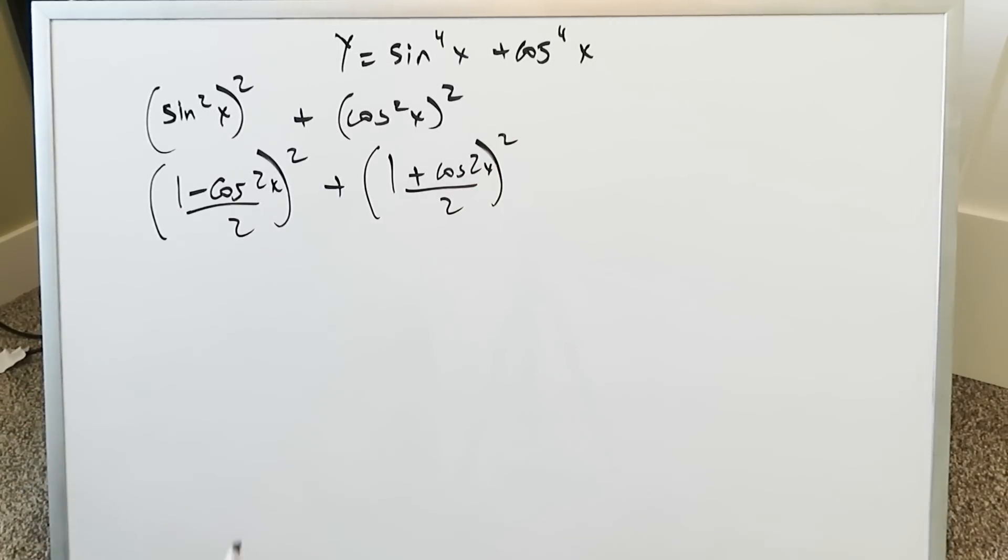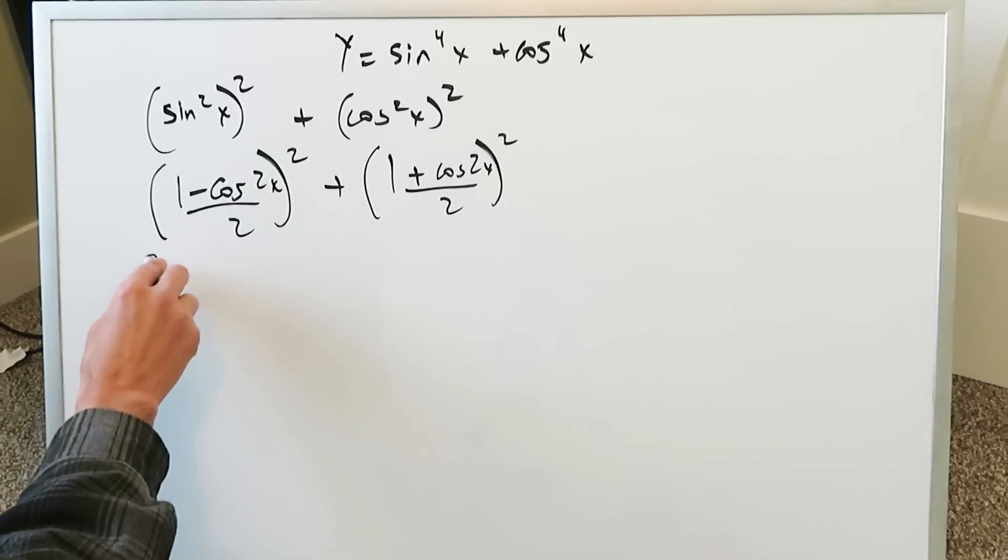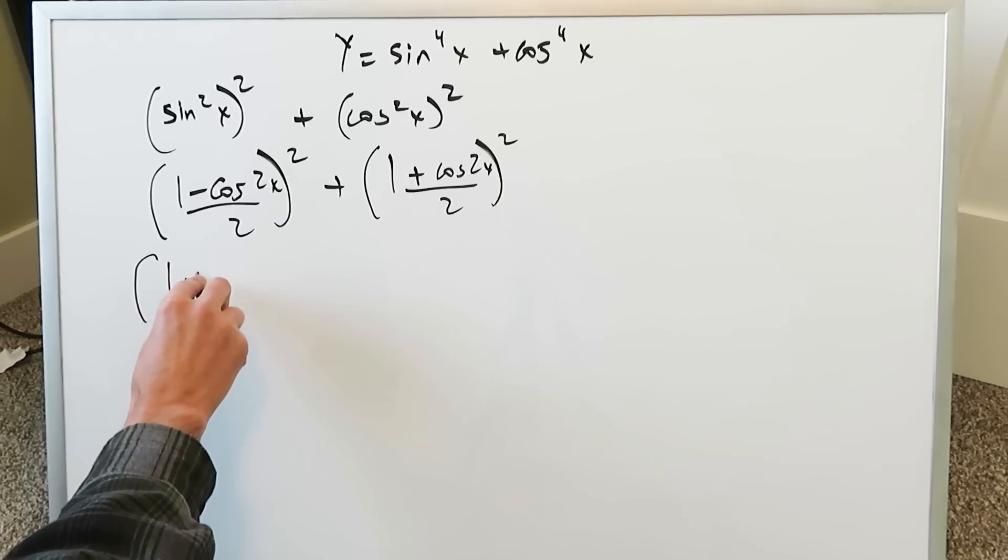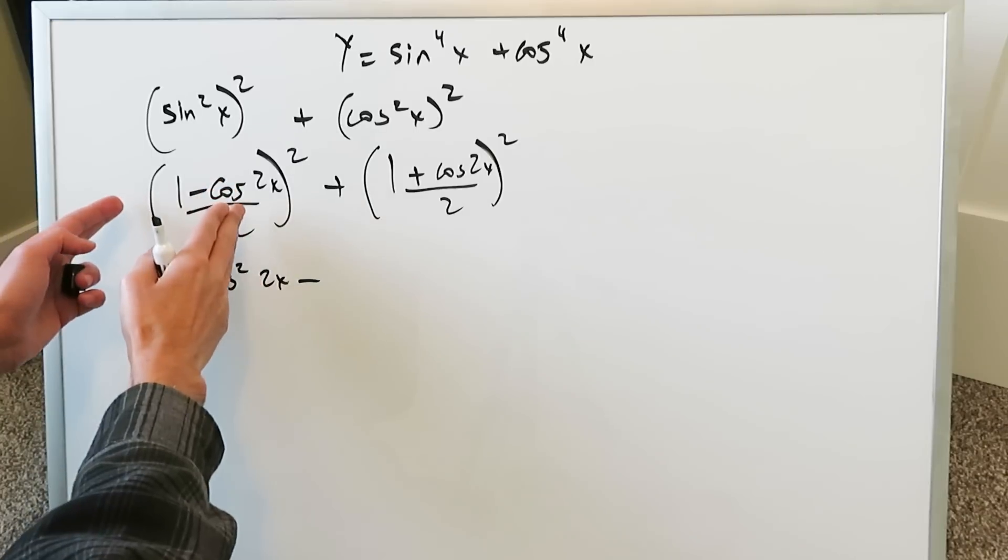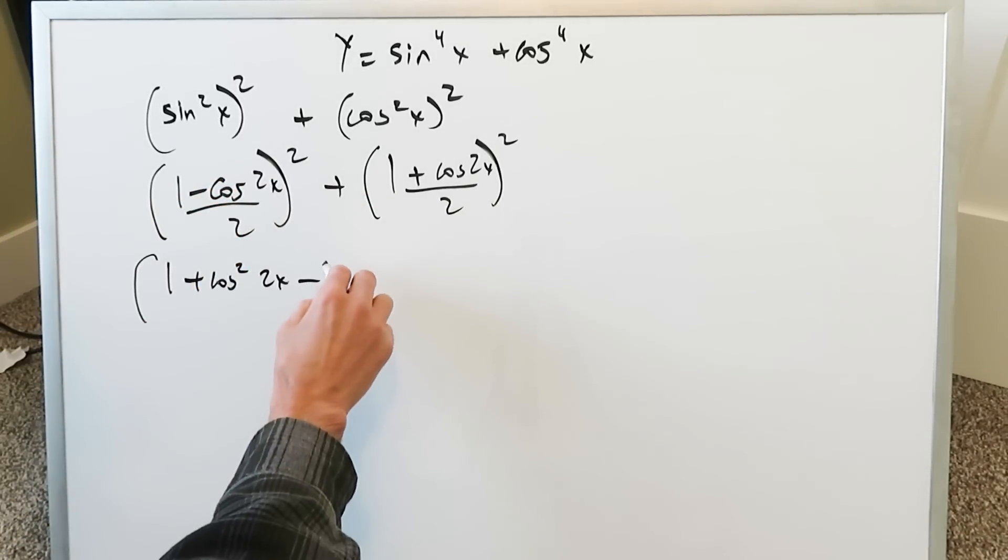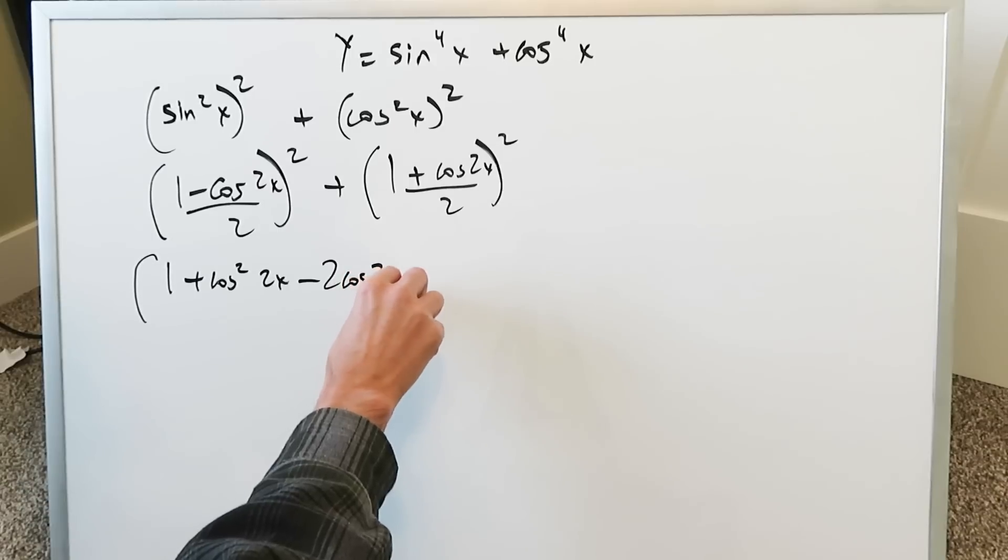Now you have to just open this up. The problem is when you open things up errors can occur so you have to be careful when you're expanding things out. You will have here in the numerator 1 plus cosine square 2x minus 2 cosine 2x.